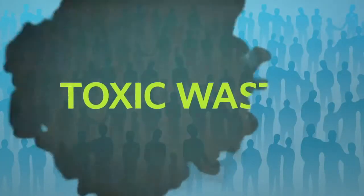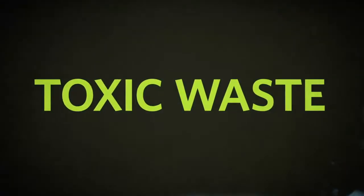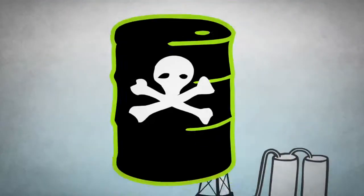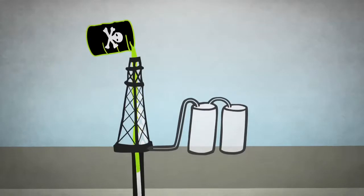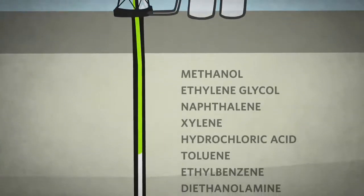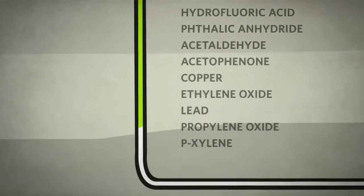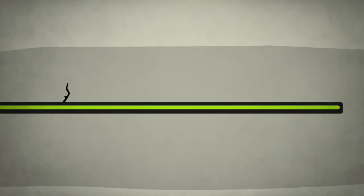And then, there is the toxic waste fluid. Each frack pumps 80 to 300 tonnes of toxic chemicals into the earth, including volatile organic compounds, plasticizers and petrochemicals.